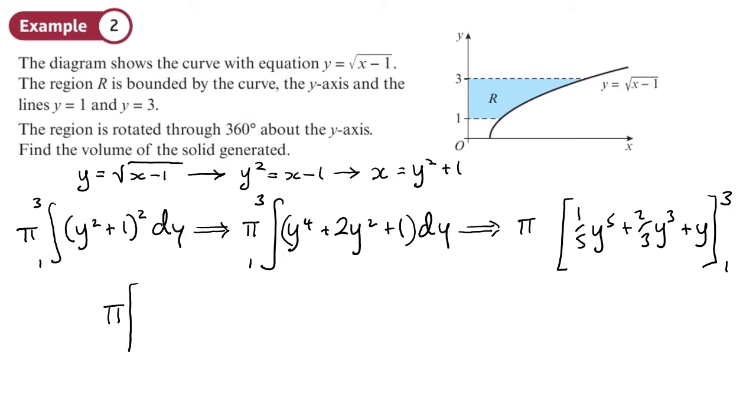Now we just substitute the numbers, not forgetting to put the π in front—everything needs to get multiplied by π. So put the 3 in: one-fifth times 3 to the 5, plus two-thirds times 3 cubed, plus 3, minus: one-fifth times 1 to the power 5, plus two-thirds times 1 cubed, plus 1.